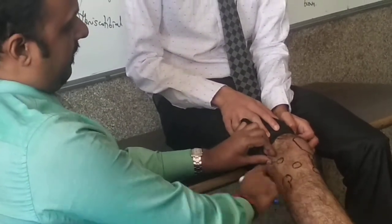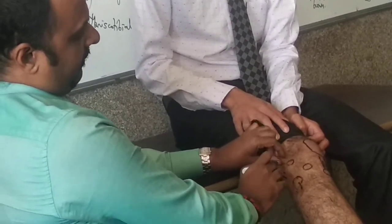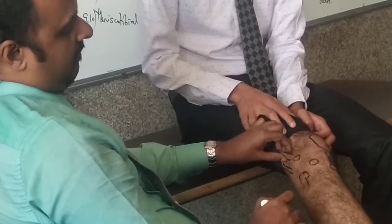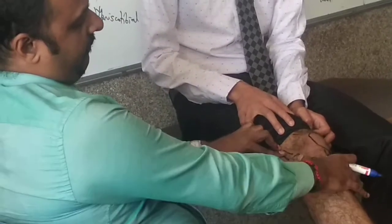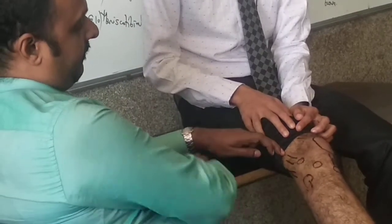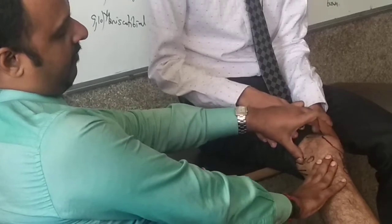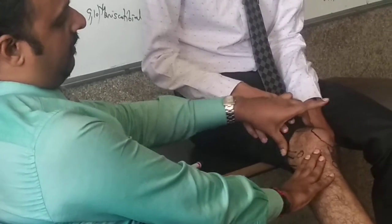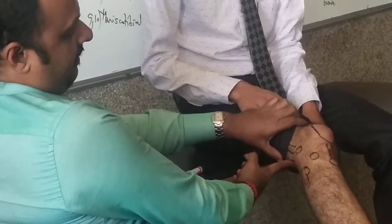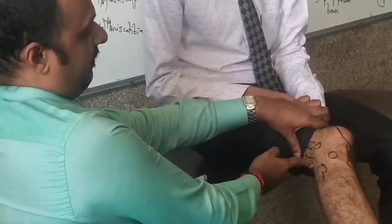Here in my hand, this is biceps femoris. This is the iliotibial band. If I am resisting abduction — asking him to push outside — the iliotibial band I can palpate. And if I am resisting flexion, the biceps femoris I can palpate.